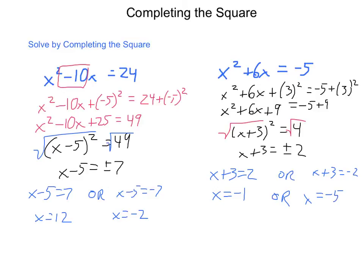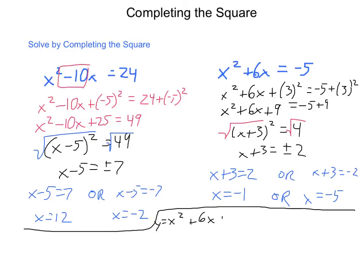I've learned how to solve using square roots, demonstrated what a perfect square trinomial looks like, and how to build perfect square trinomials and move forward. This process of building the perfect square trinomial can also be used to convert from standard form into vertex form. If I'm given an equation like y equals x squared plus 6x plus 5 and want to turn this into vertex form, I pull out x squared plus 6x inside parentheses and then the 5 outside. To make the perfect square trinomial inside, I take half of b and square it, adding 9 inside the parentheses.